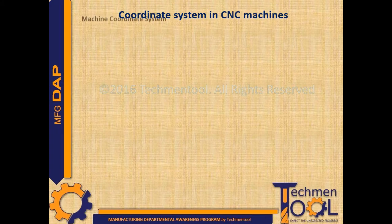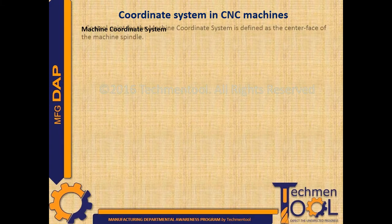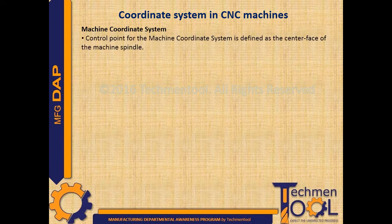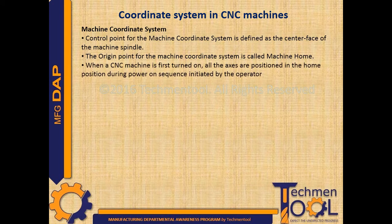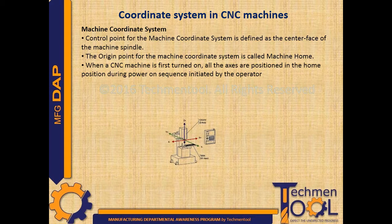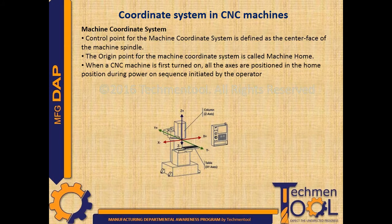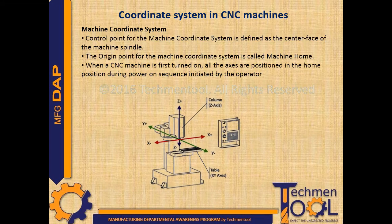Machine coordinate system: the control point for the machine coordinate system is defined as the center face of the machine spindle. The origin point for the machine coordinate system is called machine home. When a CNC machine is first turned on, all the axes are positioned in the home position during the power-on sequence initiated by the operator.